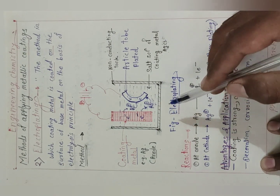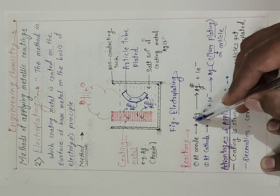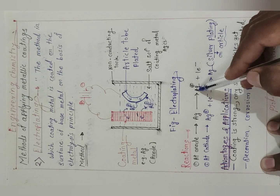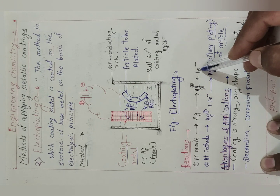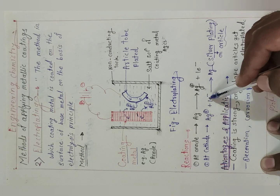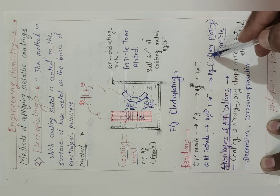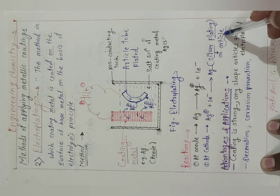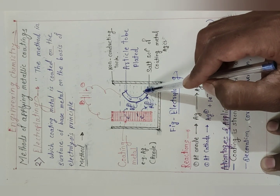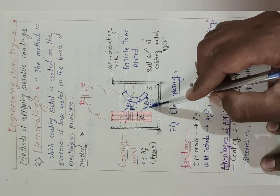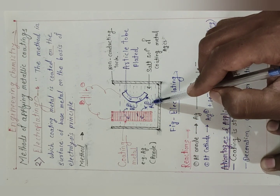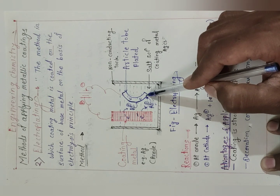Now we will see how the reaction takes place. At the anode, Ag converts into Ag⁺ plus electron. Ag⁺ enters the solution and the anodic electrons flow toward the cathode. At the cathode, electrons are present and cations are in solution, so cations react with electrons and produce the coating — that is the Ag silver plating on the article. As the size of the anode decreases, the size of the cathode increases, because the quantity of metal ions entering the solution is the same quantity getting deposited on the surface of the article.